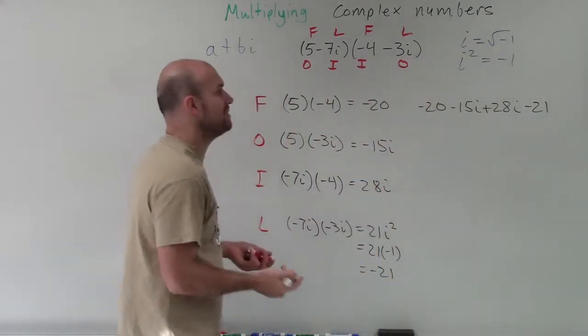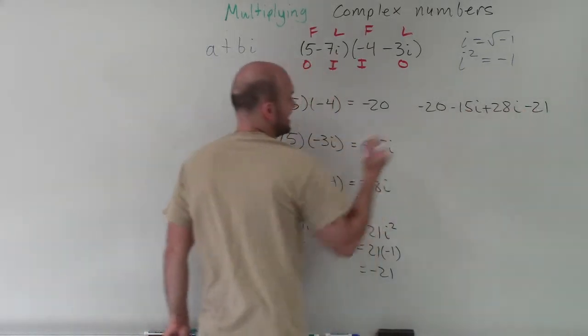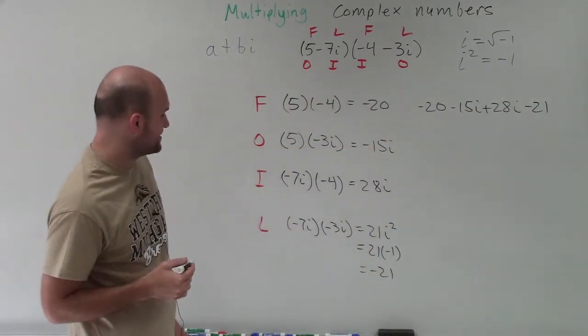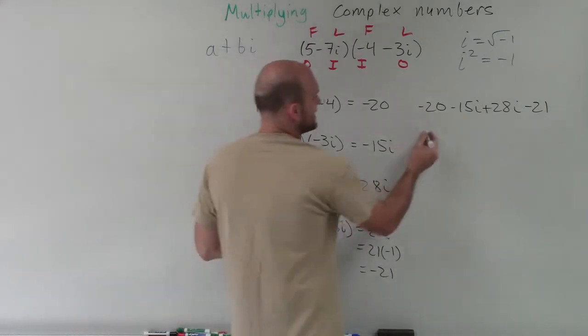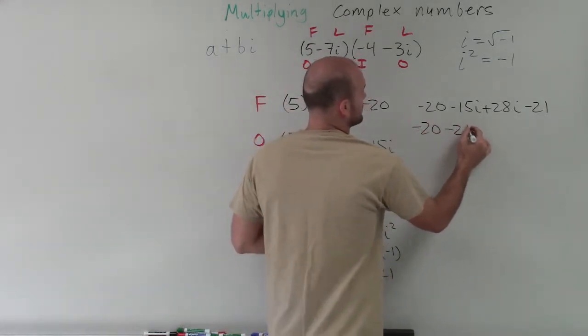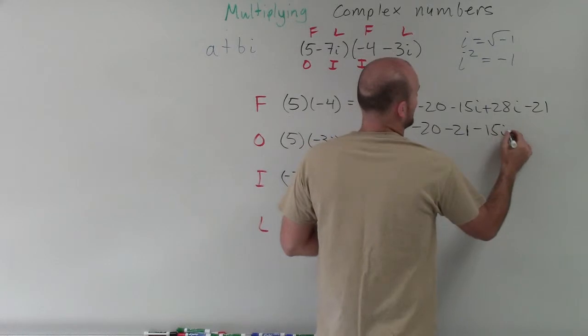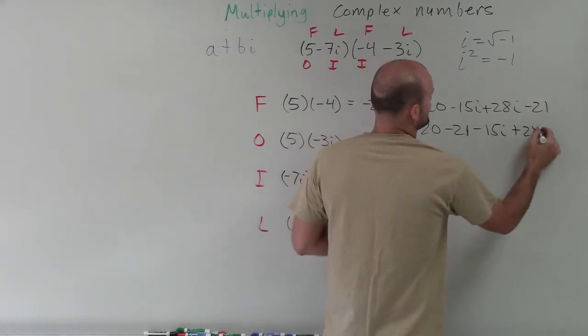Now I can rewrite this with my negative 20 and negative 21 next to each other. So I have negative 20 minus 21 minus 15i plus 28i.